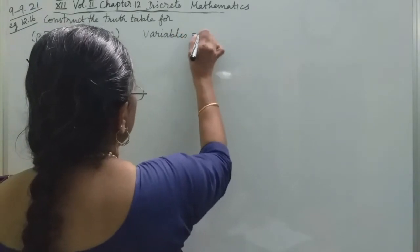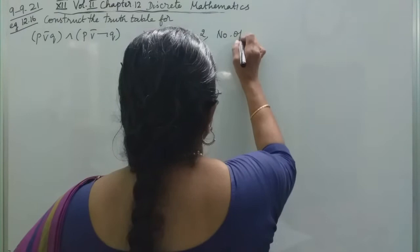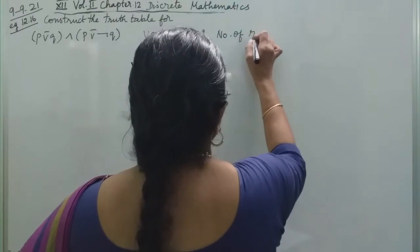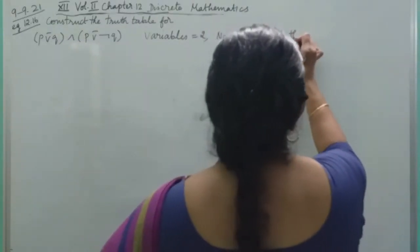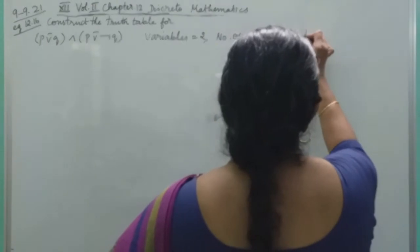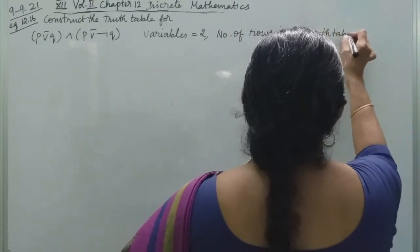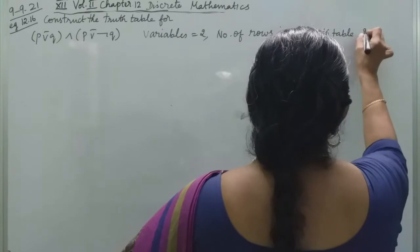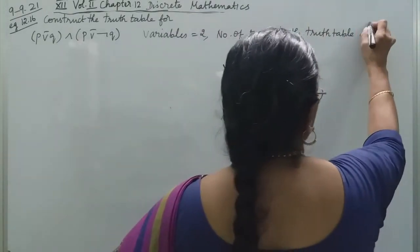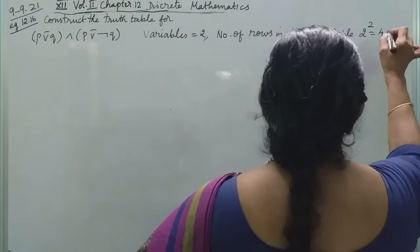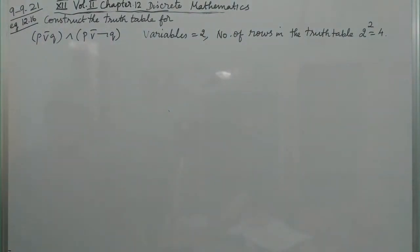Variables are two. So the number of rows in the truth table is equal to 2 squared, which is equal to 4. So the number of rows in the truth table is 4.